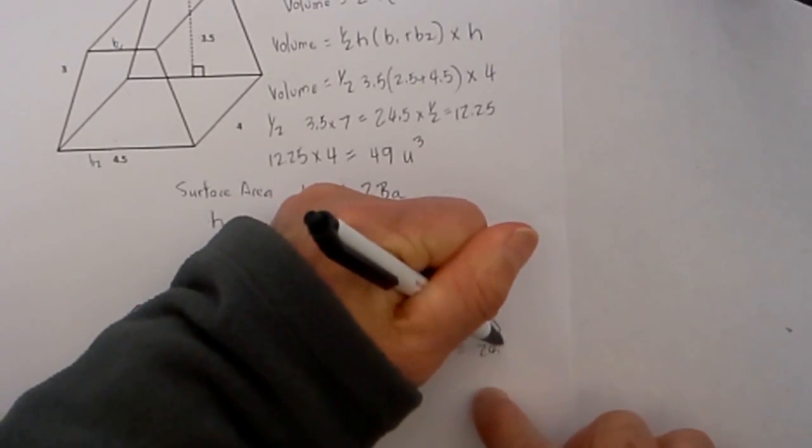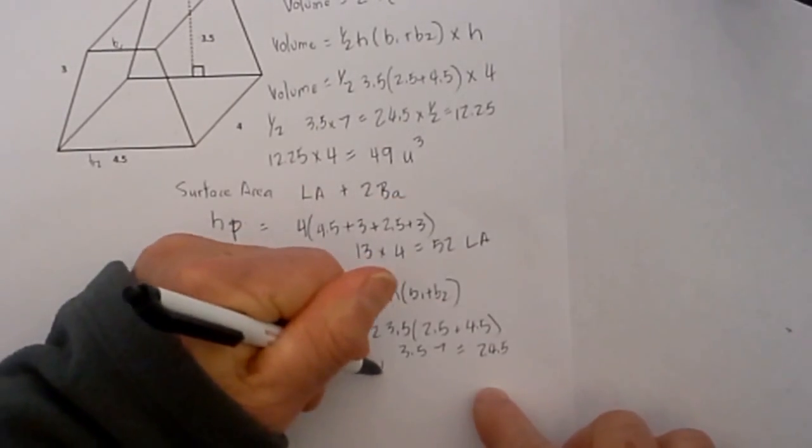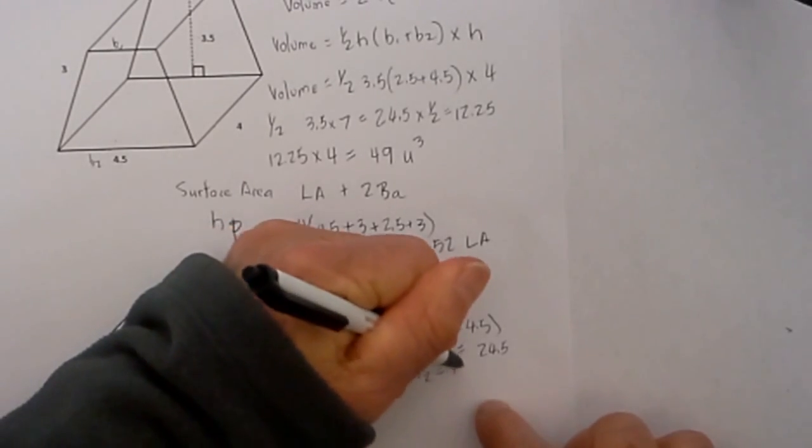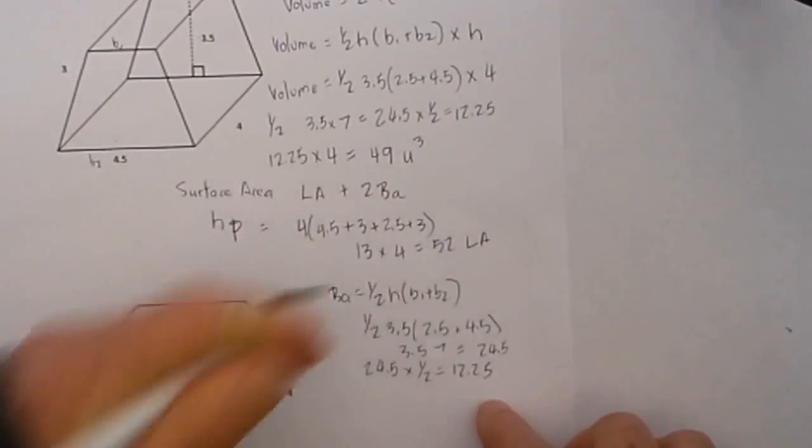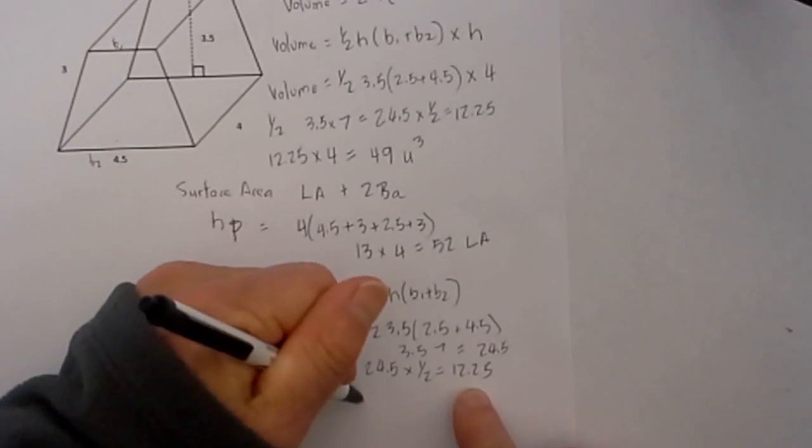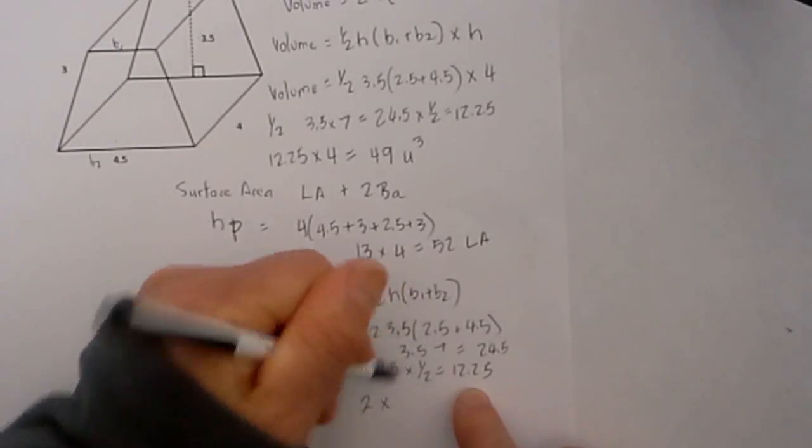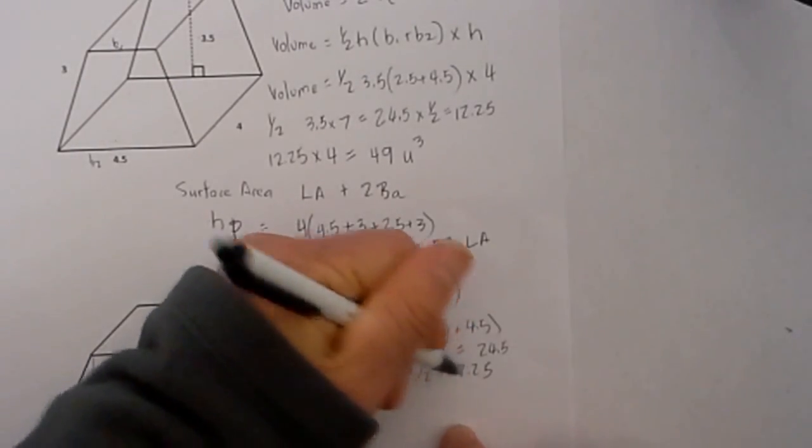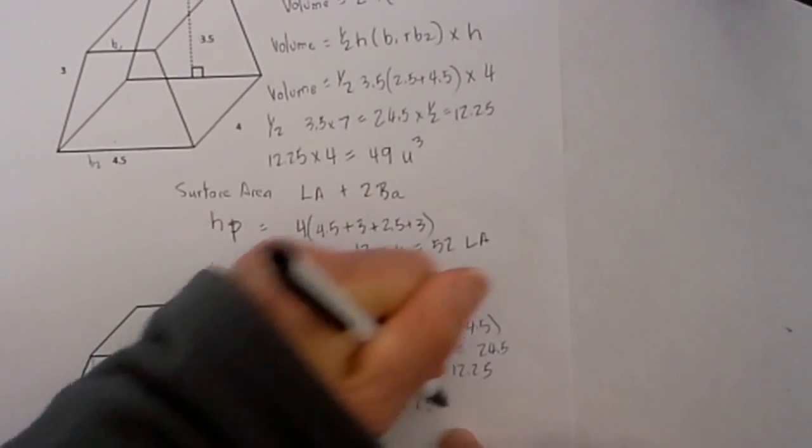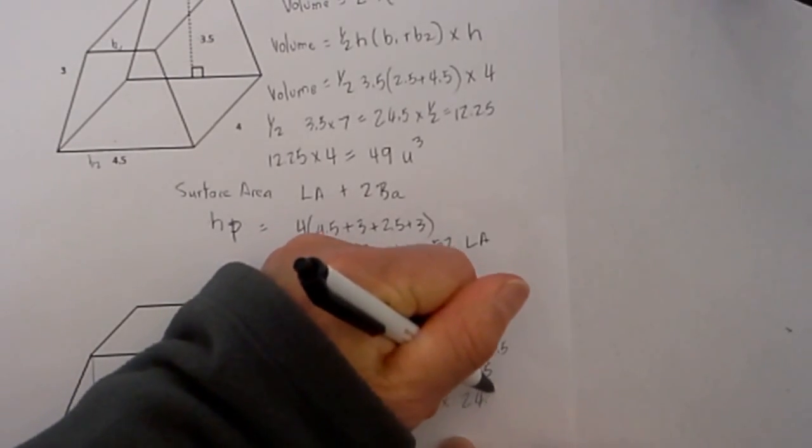And when you multiply those together, this is 3.5 times 7, which equals 24.5, and then 24.5 times 1/2 equals 12.25. But that is not exactly our base area. Remember, we have to multiply that by 2, and 12.25 times 2 equals 24.5.